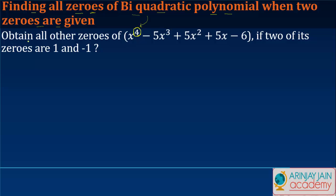You are told to obtain all other zeros of a polynomial which is given here, which is biquadratic with the highest degree being 4, if two of its zeros are 1 and -1. Now if 1 and -1 are zeros of the given polynomial, it means that x+1 as well as x-1 should be factors of this particular polynomial. Because we are told that x equals 1 and x equals -1, assuming these are the zeros.